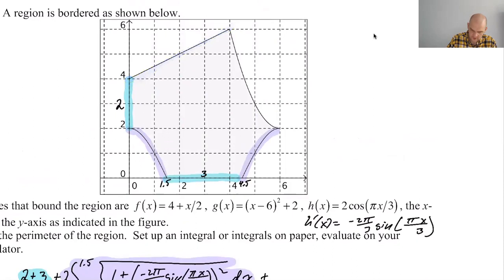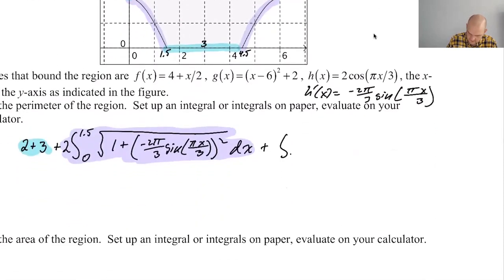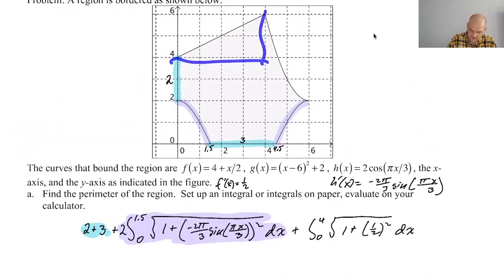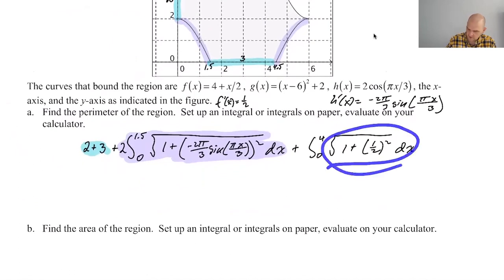So from zero to four, integral zero to four. I mean, it just ends up the same, no matter how you do it. So it doesn't really matter. One plus, F prime of X is just one half. So the quantity one half squared. And then DX. It's hard to imagine that's going to end up the same answer though. What would this be? This is a four by two. So the square root of 20. And then this, I gather somehow also gives you the square root of 20. That's neat.